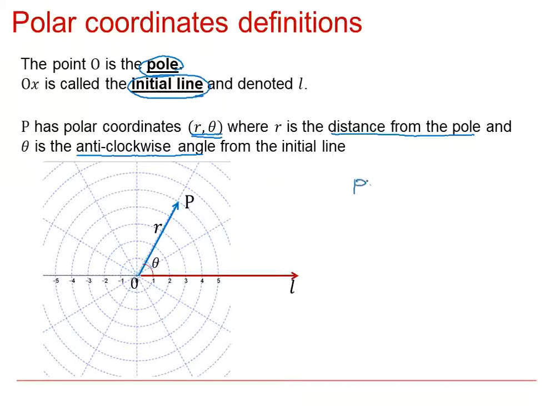For example, we can talk about the point P, which is defined by 4 units from the pole and a direction of pi by 6 from the initial line. A direction of pi by 6 from the initial line is along this dashed line, and we need to be 4 units from the pole. So, that is the point P, defined by 4, pi by 6.